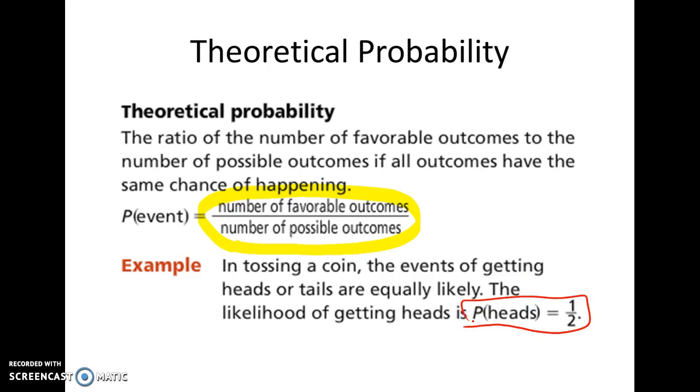So the difference between experimental and theoretical, experimental would be, experimental probability, if I were to take this event and do an experiment, say I flip it four times, and I get heads the first time, I get heads the second time, I get heads the third time, and I get heads the fourth time. That does not mean that every time I flip a coin, I'm going to get heads. In that experiment, it was a 100% chance of getting heads. But in theory, I should get heads just 50% of the time. So that is the difference between the two.